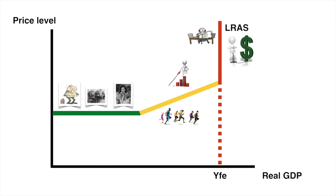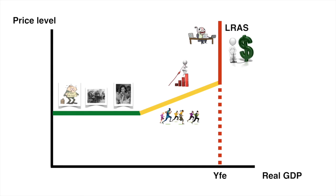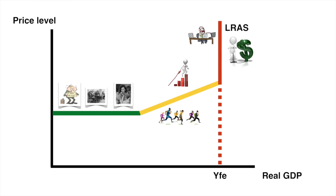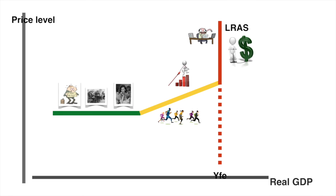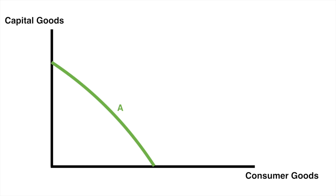That could happen by any method which increases the quantity or quality of the factors of production. Before we look at AD and LRAS together, let's review what could shift long-run aggregate supply outwards. Any of the factors listed will shift out an economy's PPF by increasing productive potential.